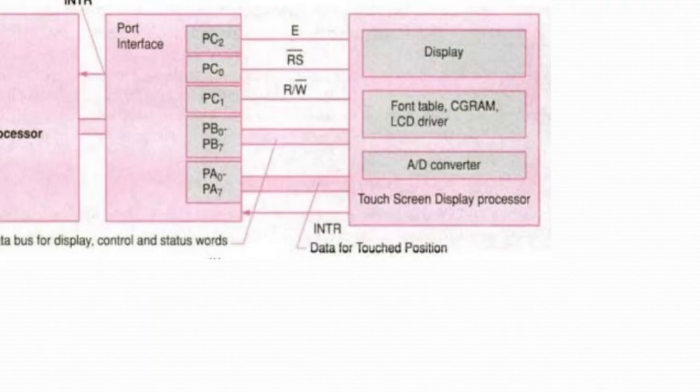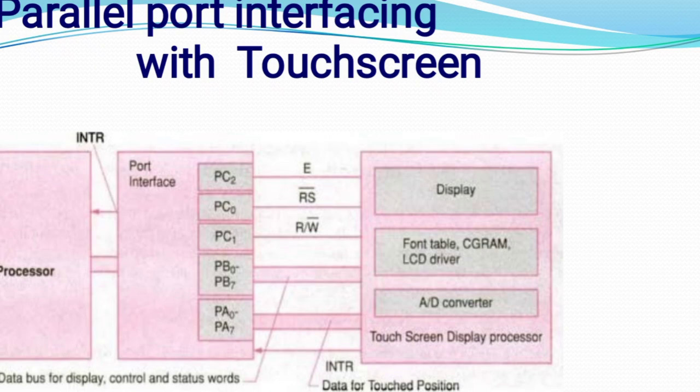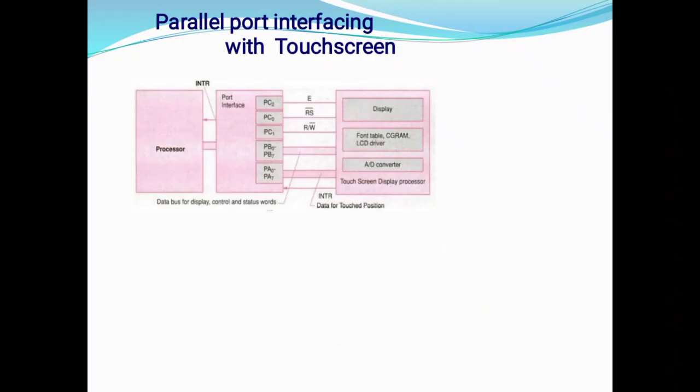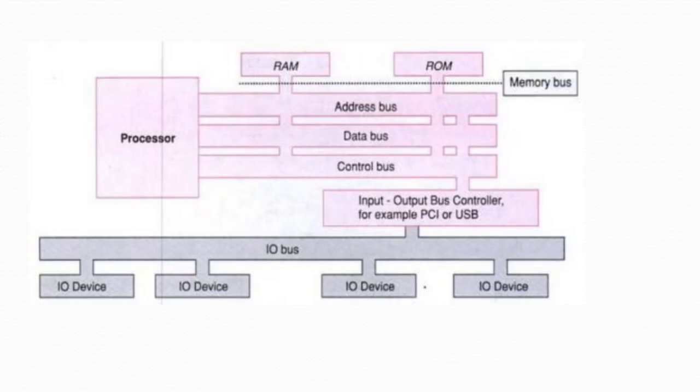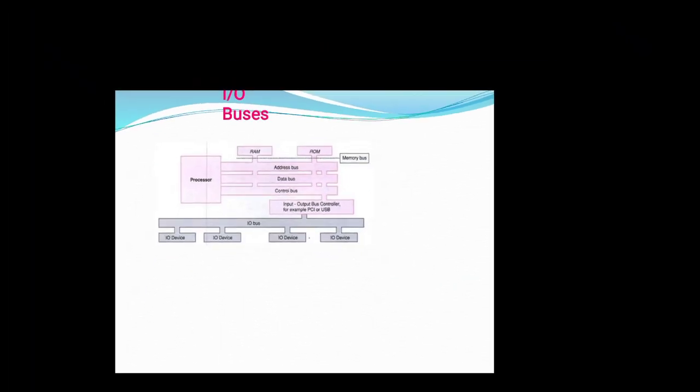This is the difference of a parallel interface with a touch screen. The touch screen display processor is on the right side. This is the input output bus of a peripheral device. Here we have four input output devices connected.